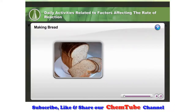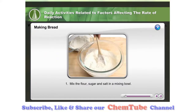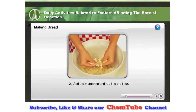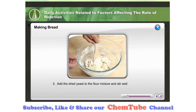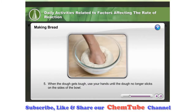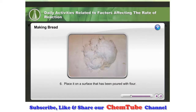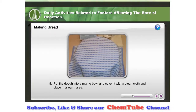Do you know how bread is made? Here is a recipe for making bread. Mix the flour, sugar and salt in a mixing bowl. Add the margarine and rub into the flour. Add the dried yeast to the flour mixture and stir well. Add warm water into the flour mixture and stir using a wooden spoon thoroughly. When the dough gets tough, use your hands until the dough no longer sticks on the sides of the bowl. Place it on a surface that has been dusted with flour. Knead the dough until it becomes smooth and elastic. Put the dough into a mixing bowl, cover it with a clean cloth, and place in a warm area.